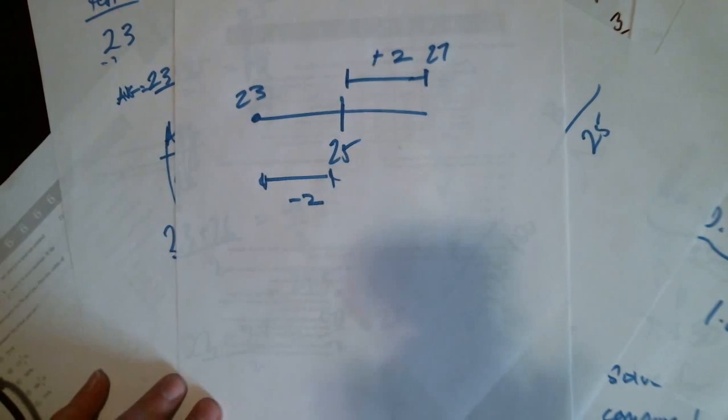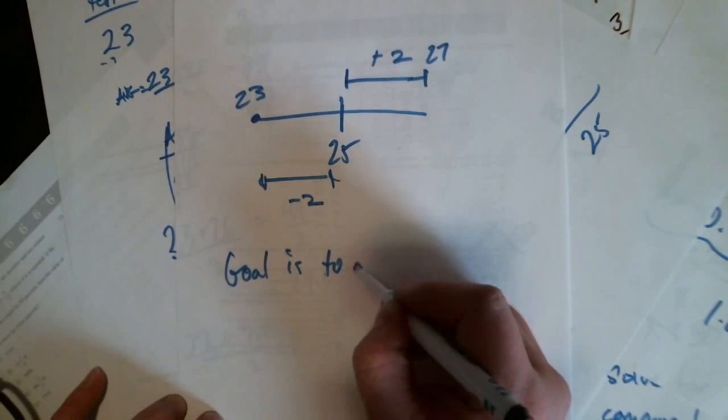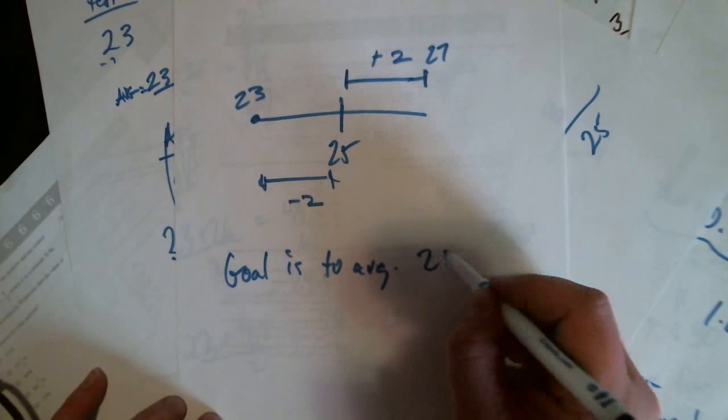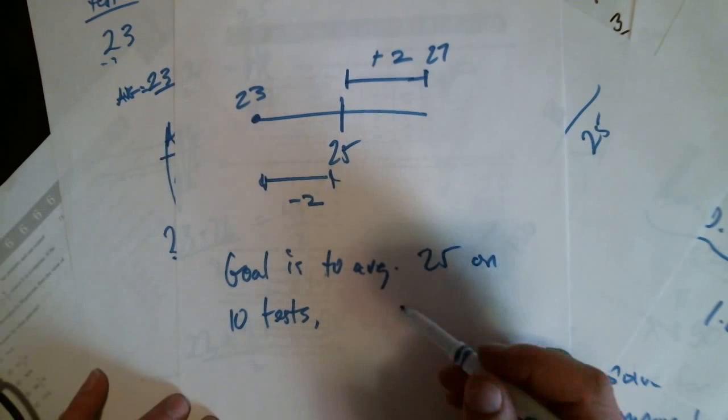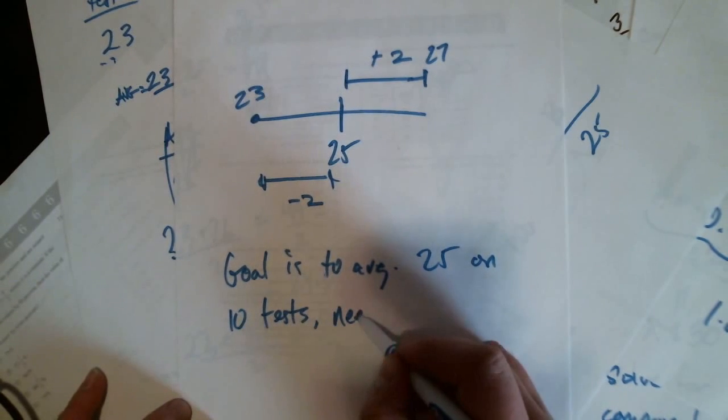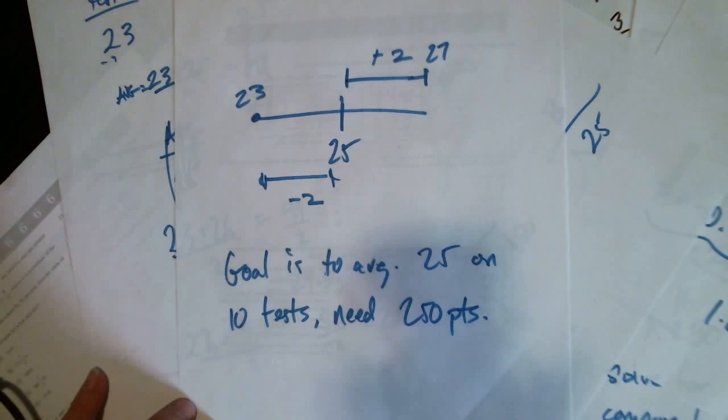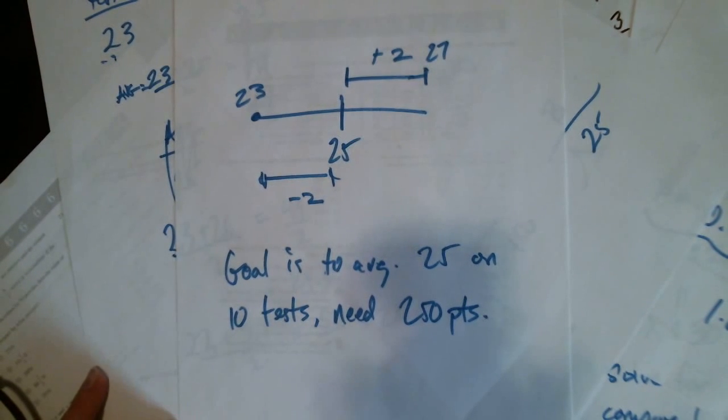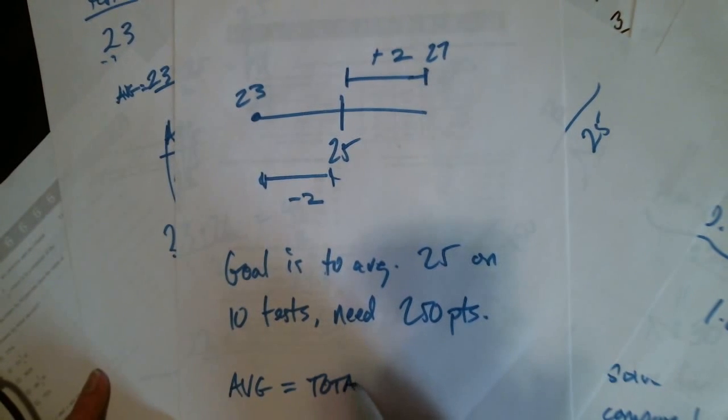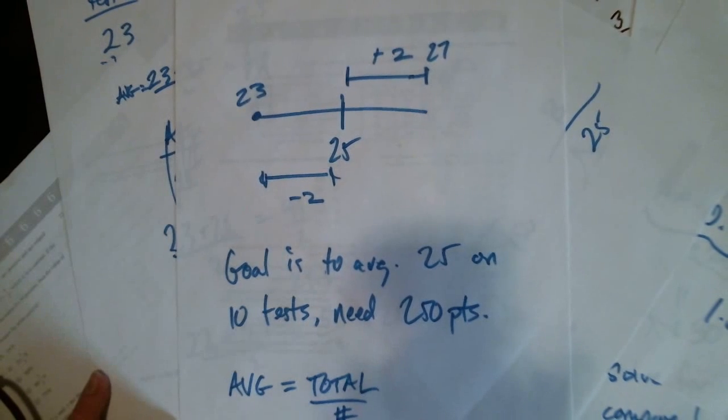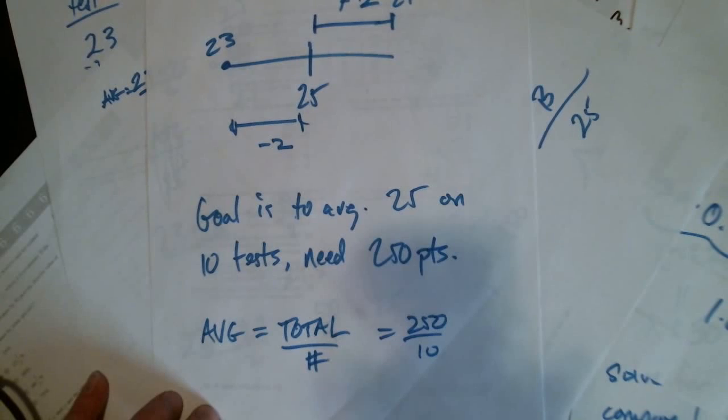So that's one way to think about it. Like, in other words, if your goal is to average twenty-five on ten tests, what you really need to do is you need to get two hundred and fifty points one way or another. Because at the end, your average is your total over the number. So as long as that total is two-fifty, you're okay.